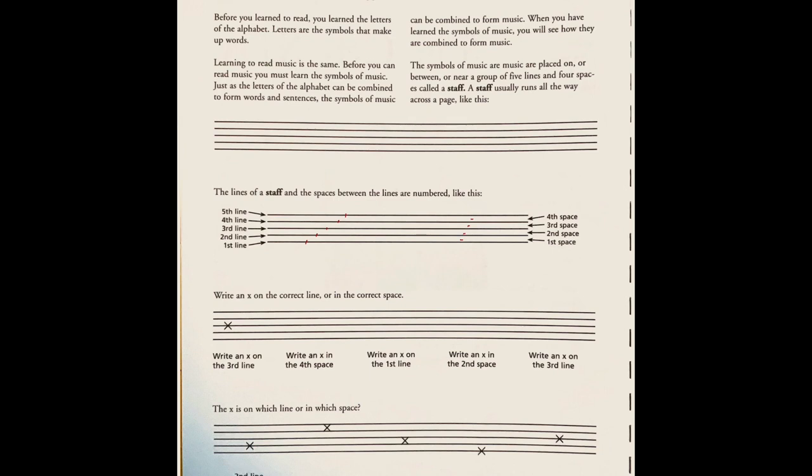So we're going to just do this together. Write an X on the third line. So we're going to go one, two, three. And just like when we start to write note heads later, we're going to try and make sure the X goes right over top of that line. It says write an X in the fourth space. So space now, one, two, three. Here's our X. And I try to make sure that X touches the line above it and the line below it and that it just fills out that space completely.